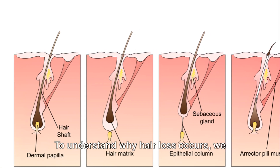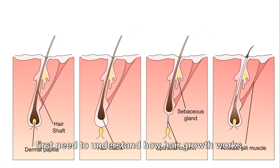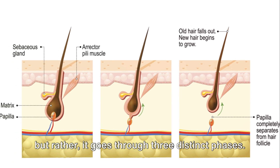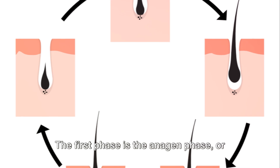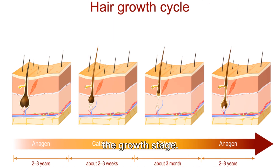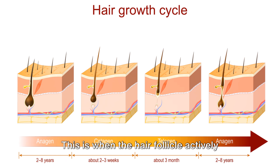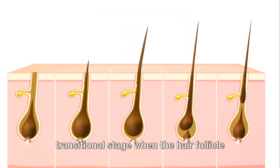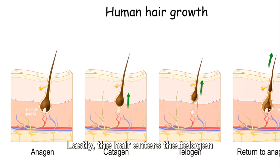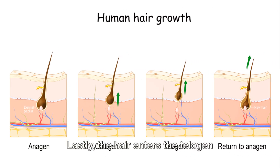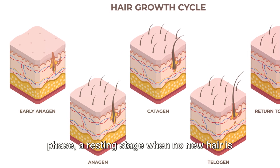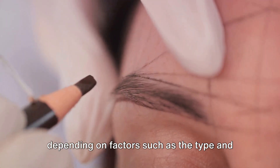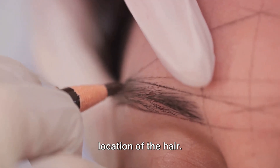To understand why hair loss occurs, we first need to understand how hair growth works. Hair growth isn't a continuous process, but rather it goes through three distinct phases. The first phase is the anagen phase, or the growth stage — this is when the hair follicle actively produces hair. Then comes the catagen phase, a transitional stage when the hair follicle renews itself. Lastly, the hair enters the telogen phase, a resting stage when no new hair is produced and the existing hair falls out. The duration of these stages can vary depending on factors such as the type and location of the hair.